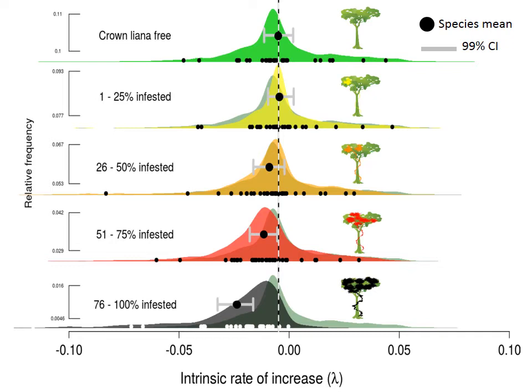In the next graph, each row shows the distributions of estimated population growth rates from the IPMs for trees that have different proportions of their crown infested. These distributions are calculated by sampling from the posterior distribution of each regression model that builds the IPM, and then recalculating population growth rates. The black dots give the species means, and the grey bars give the mean and 99% confidence intervals for the community. A population growth rate above zero represents an increasing population, and those below zero represent declining populations. We conclude that especially trees with more than 50% of their crown infested are significantly impacted, having lower population growth rates.